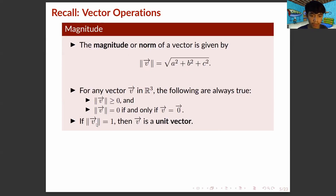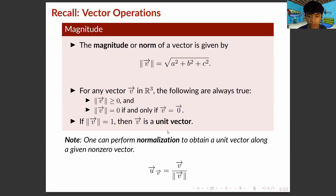If the magnitude of vector V is equal to 1, then vector V is a unit vector. We can perform normalization to obtain a unit vector given a non-zero vector. The formula is vector V over the magnitude of vector V.